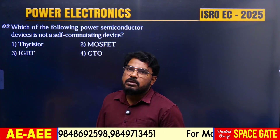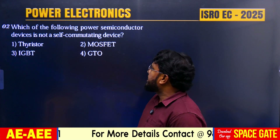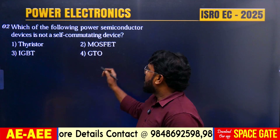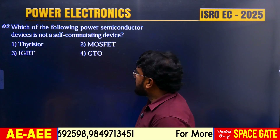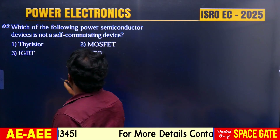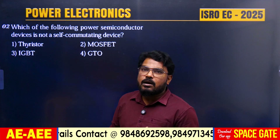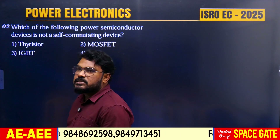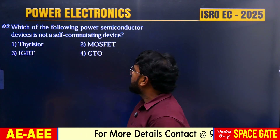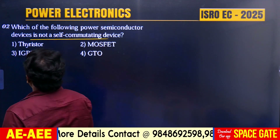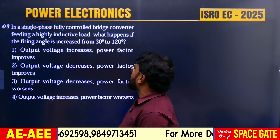Question 2: Which of the following power semiconductor devices is not a self-commutating device? Options: thyristor, MOSFET, IGBT, GTO. MOSFET, GTO, and IGBT are self-commutating switches — no external circuit is required to turn them off. However, the thyristor requires an extra commutation circuit to turn it off. So thyristor is the answer.